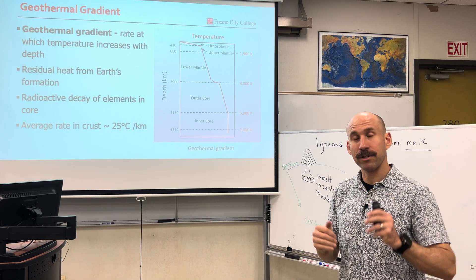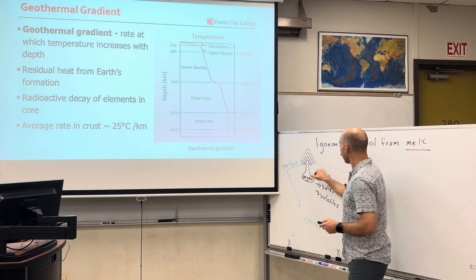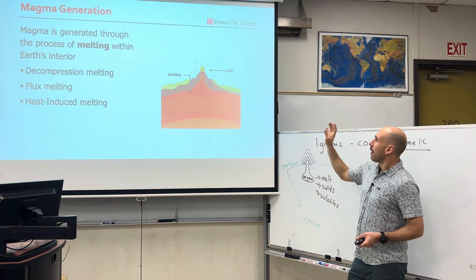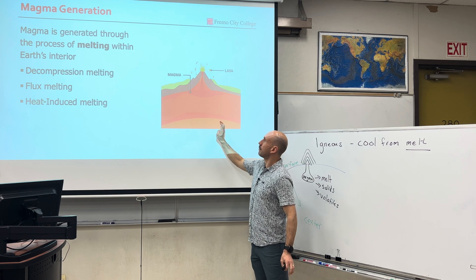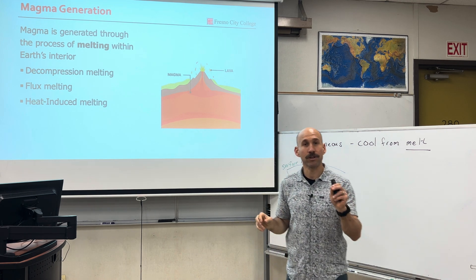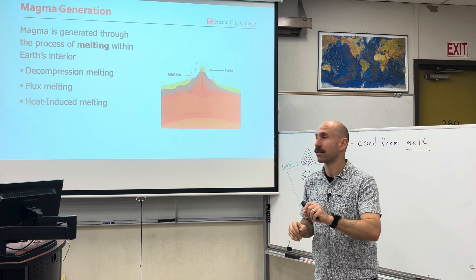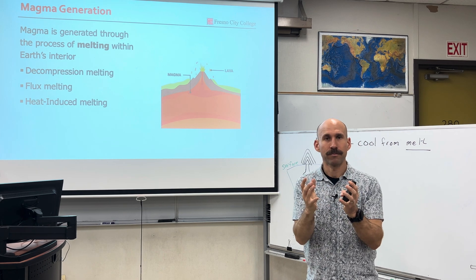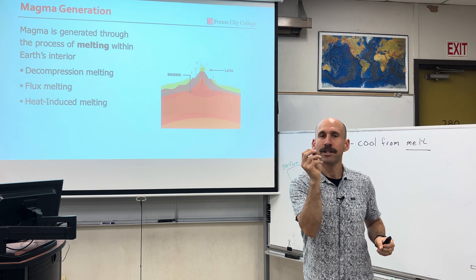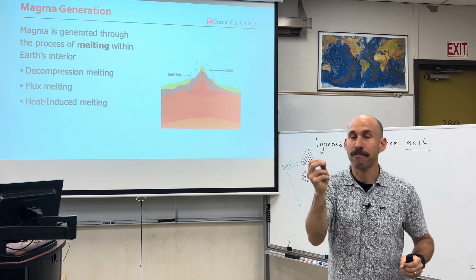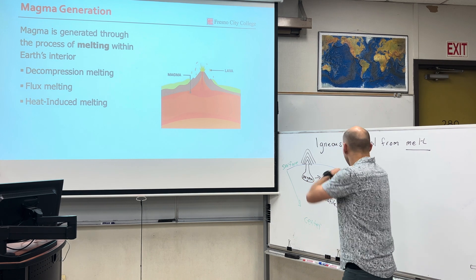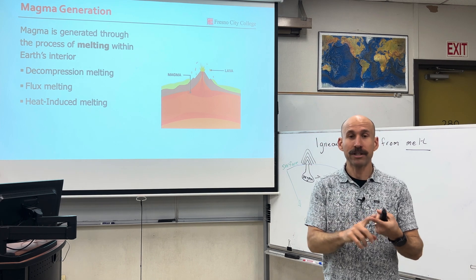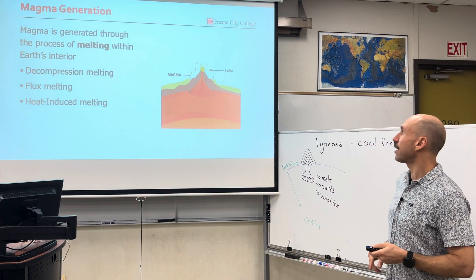There's a gradient from the surface to the center called the geothermal gradient. Now, when things get hot, they melt. But in earth's interior, it doesn't just melt everywhere — it only melts in certain locations. Process-based. There are three processes that are going to take the solid mantle, made of peridotite, and in certain locations in the upper mantle, cause the mantle to melt, creating magma. These three processes are decompression melting, flux melting, and heat-induced melting.